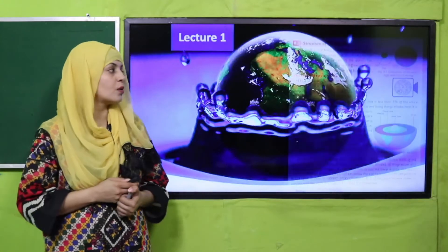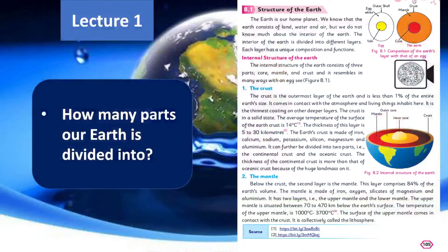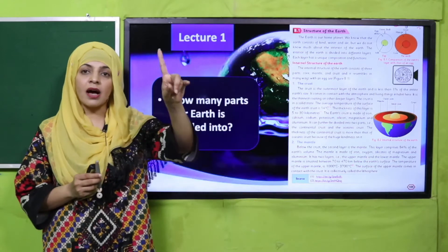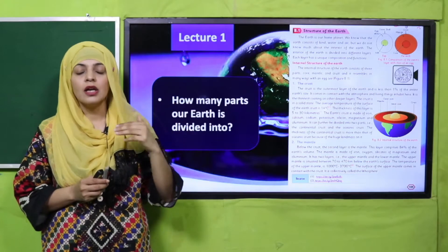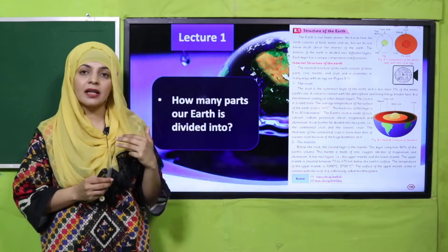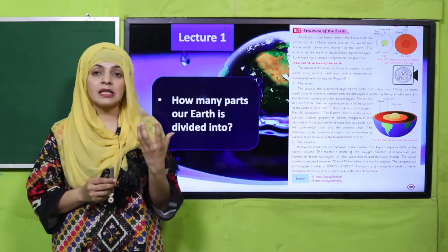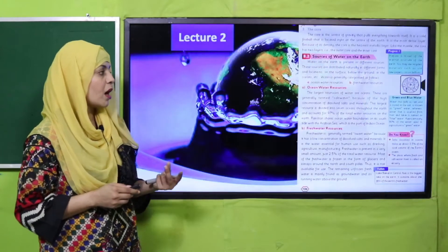Now is the time for review. Let's start with lecture number one, in which we discussed about the structure of the earth. Quickly tell me: how many layers is the earth divided into? That is crust, mantle, and core — so three layers of the earth, just like an egg. We live on the crust, then there is the mantle, and the very inner part — the center — is the core.